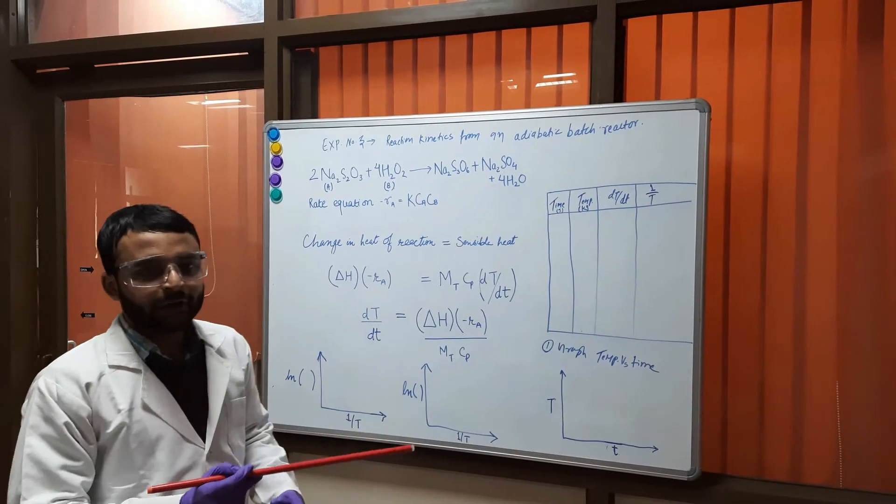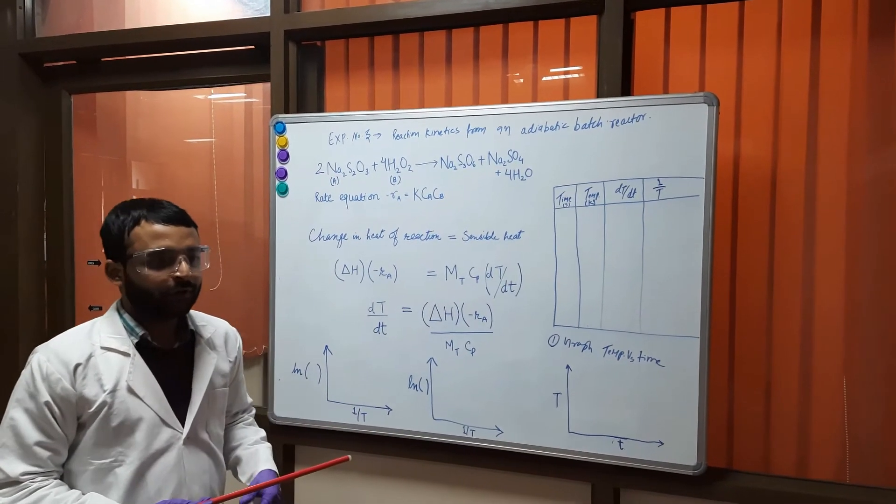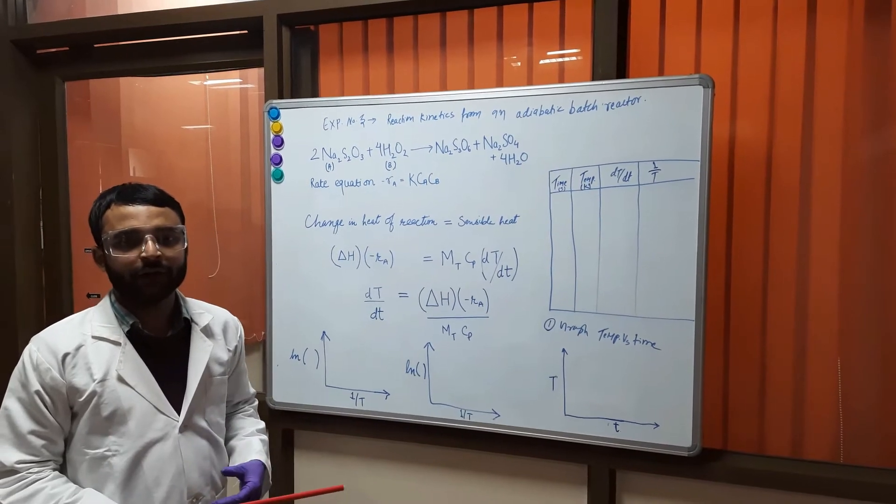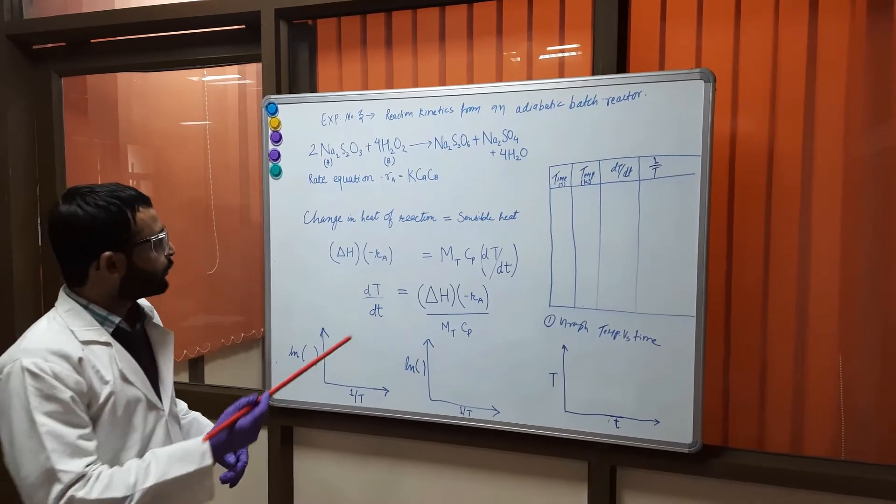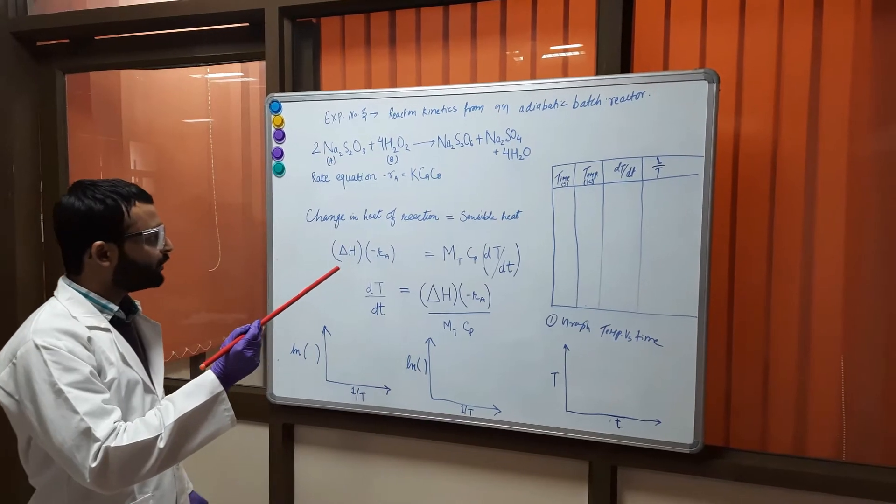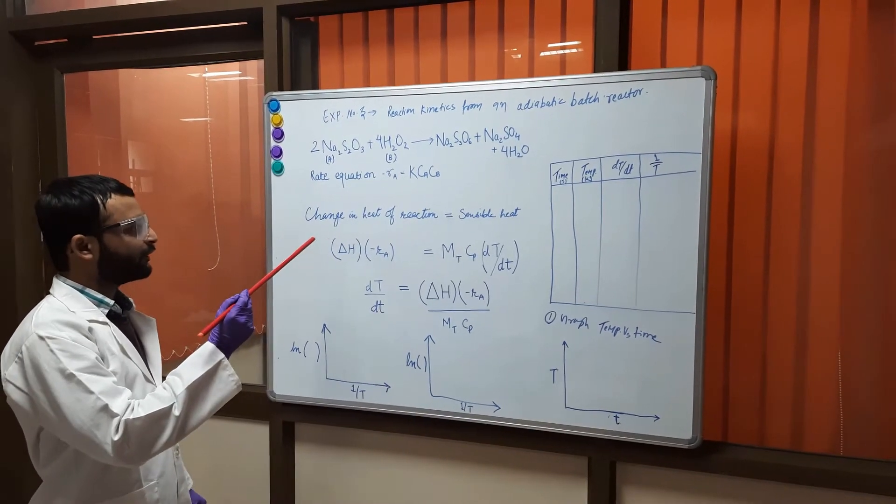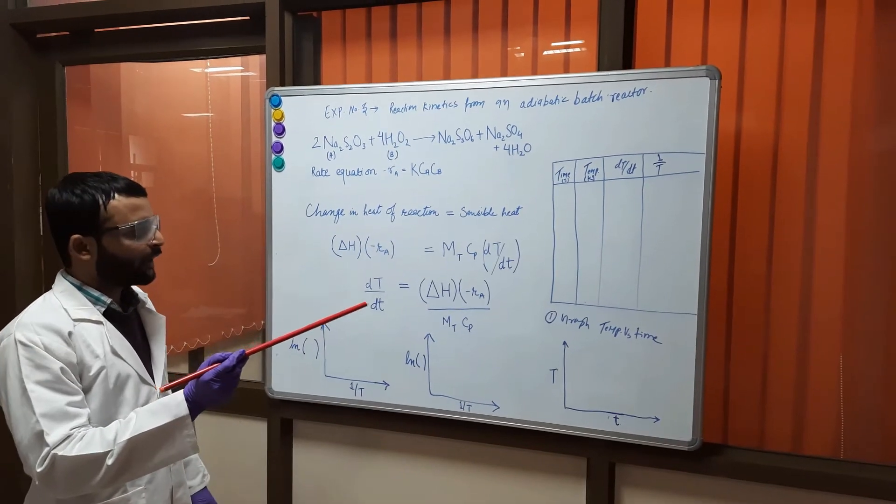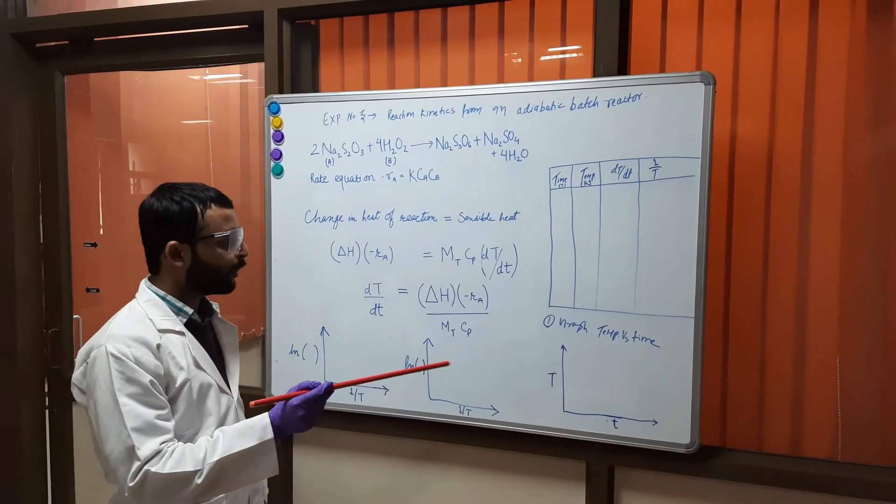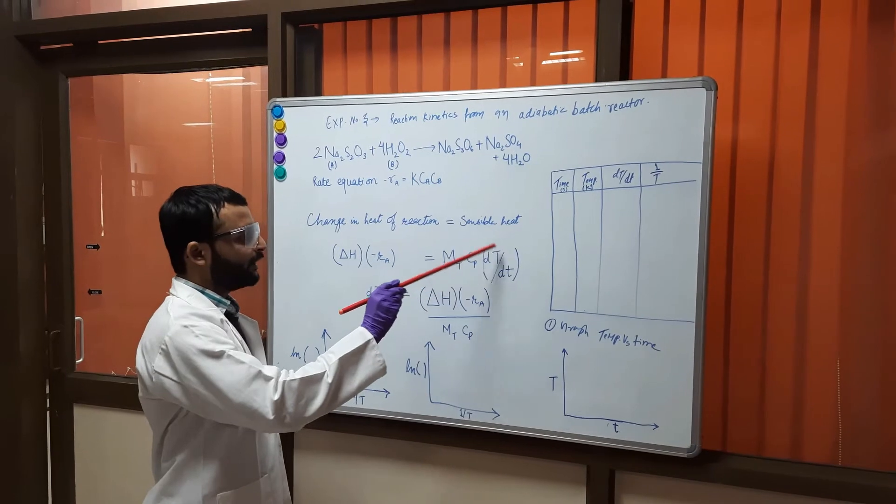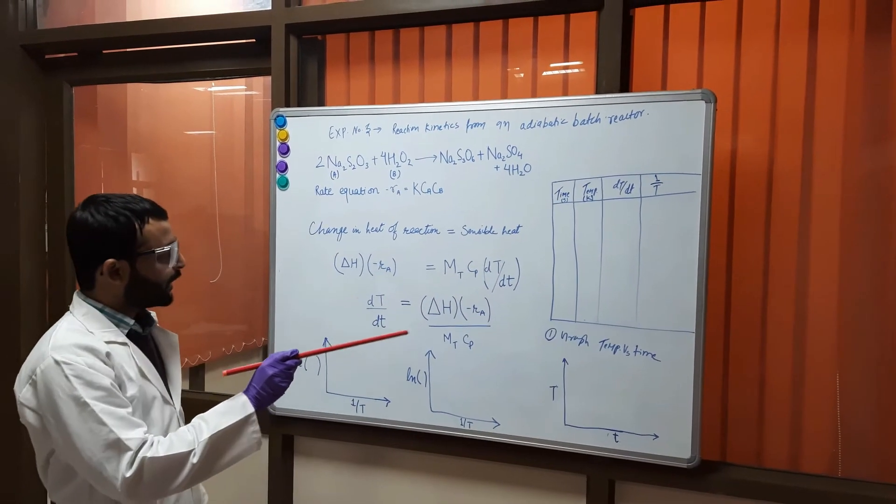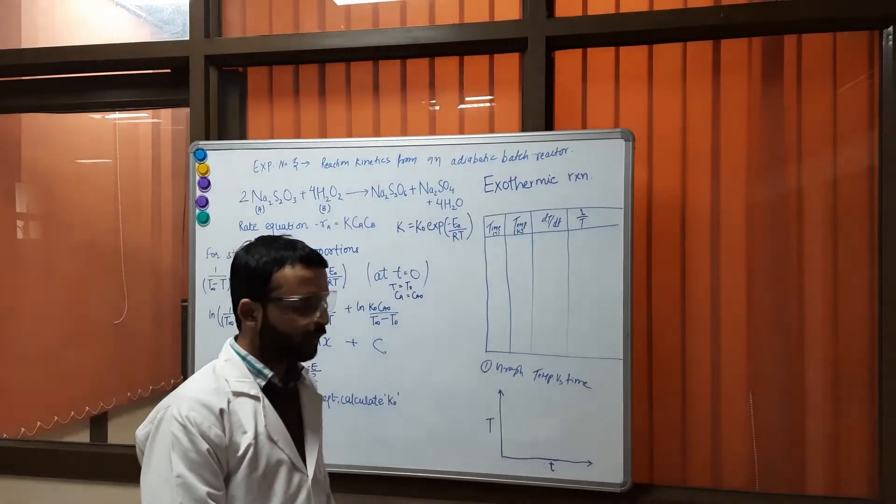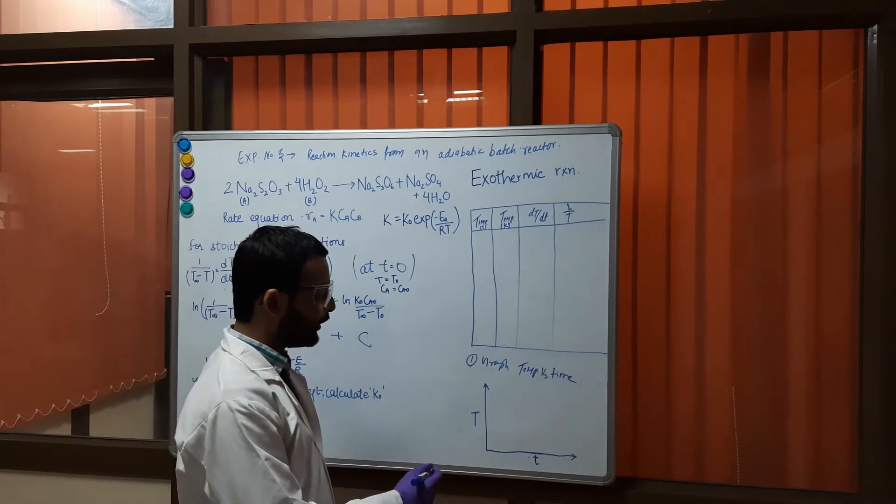Now for any kinetic study we need to measure the activation energy as well as the reaction rate constant. So when applying the energy balance we see that the change in heat of reaction is equal to the sensible heat and by the temperature versus time plot we get the dT by dT from the slope of this plot and we get this final equation. Since this reaction is exothermic we will find an increasing temperature with respect to time.